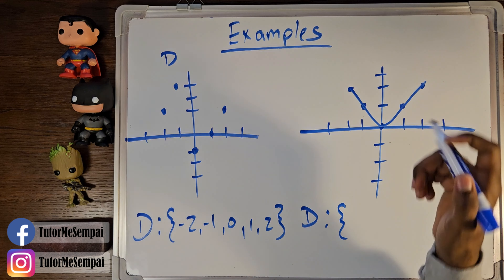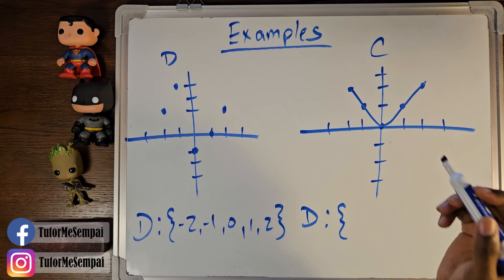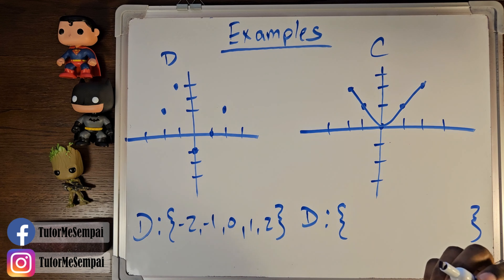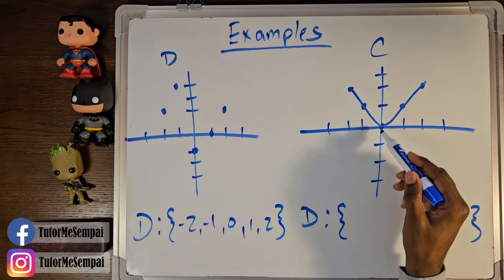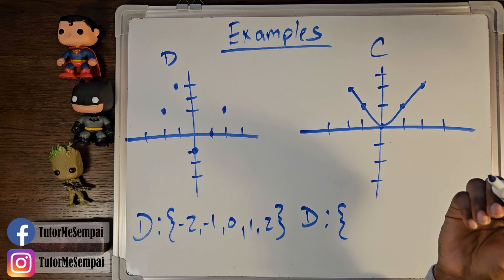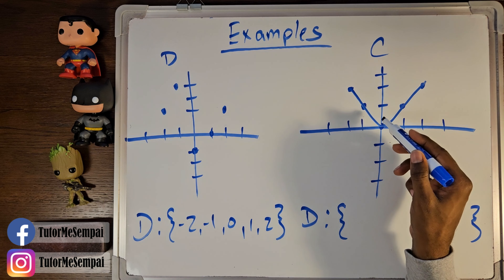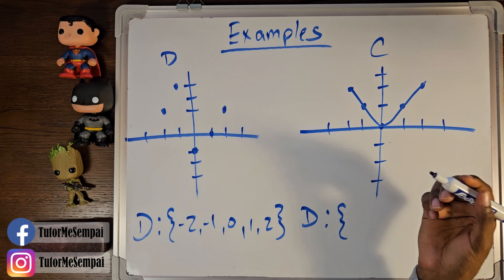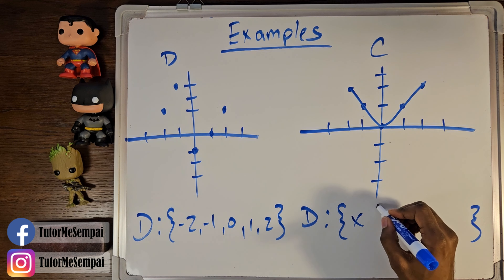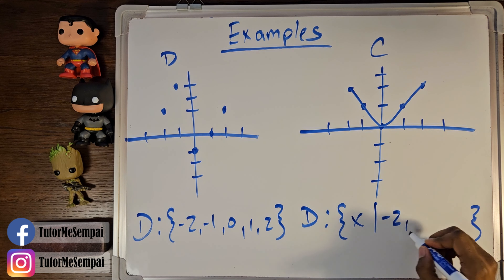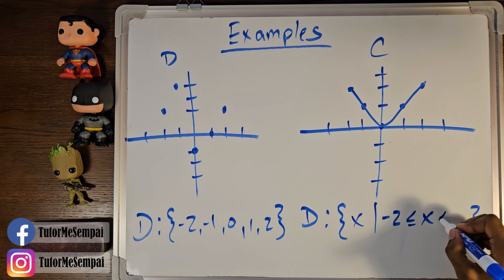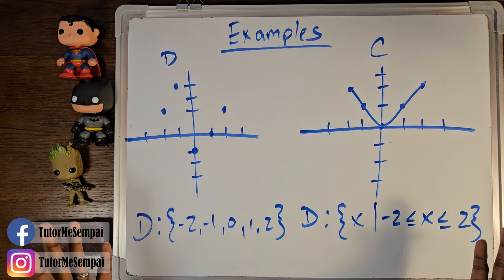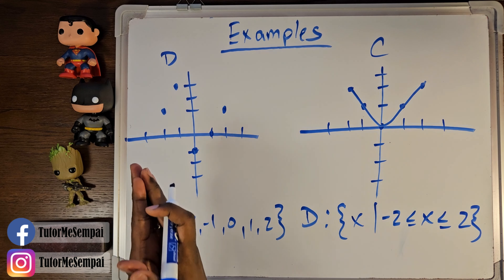Now if we look at this graph, our second example, we see that this is actually going to be continuous, because all of these points are connected. Now what's the domain here? Now you could say negative two, negative one, zero, one, and two. But remember, this is connected, and that connection means that we are defined for all of those x values. So in fact, we have this range here where you're going to go from negative two — make sure we have our inequality — x all the way up to two. And of course the range is going to be a little bit different, but we don't need to worry about that right now. We just want to see what's the domain and can we determine if they're discrete versus continuous.